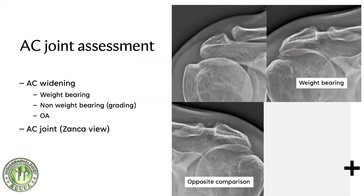Looking at the acromioclavicular joint: in trauma we're looking to see if there's AC joint widening. Many times the image looks widened but isn't truly widened. If the patient has tenderness over the area and you want to confirm widening, you can take an x-ray without weight bearing and then with weight bearing to see widening of the acromioclavicular space. You can also compare it to the opposite side. Widening is one of the signs of grade one acromioclavicular separation, where the AC joint capsule is stretched but not completely torn.